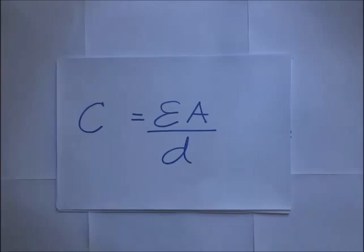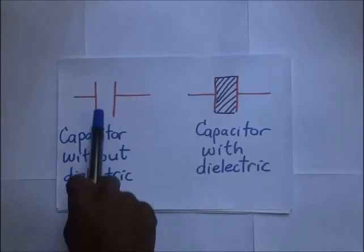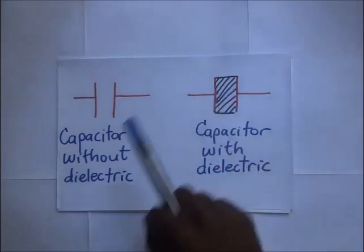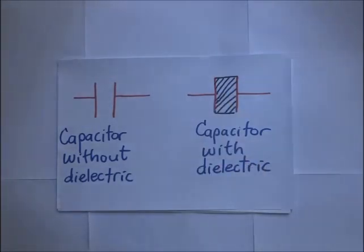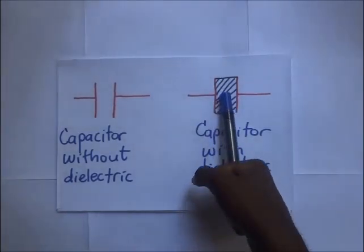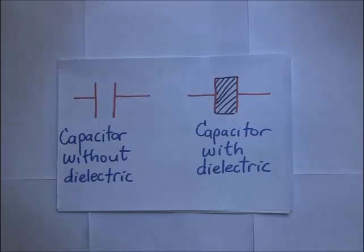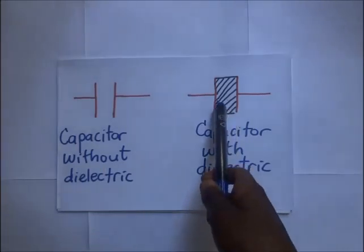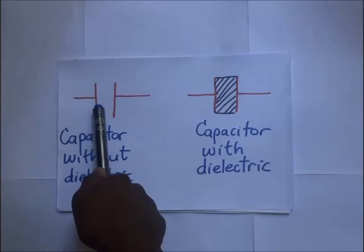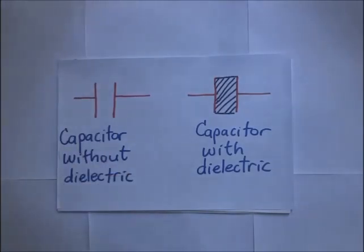Now we have two capacitors here: one that does not have a dielectric between its plates, and one that has a dielectric between the plates. A dielectric is an insulator — it can be water, oil, or air. Using the previous formula, we can calculate the capacitance of both capacitors.